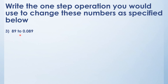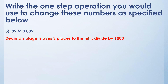Last question: 89 को 0.089 में convert करना है. यहाँ देखिए, 89 एक whole number है, यानि यहाँ decimal places 0 थे और यहाँ 3 हो गए decimal places. इसका मतलब decimal point left की तरफ 3 places move कर गया, यानि हम 1000 से divide कर रहे हैं. तो 89 में 1000 से divide करके — 3 places move करेगा — 089 और यहाँ decimal लगाएंगे: 0.089.